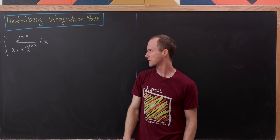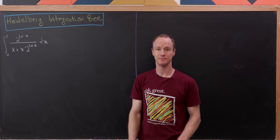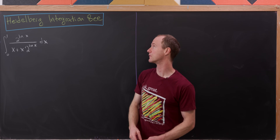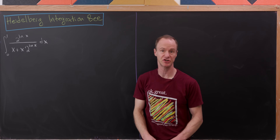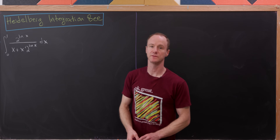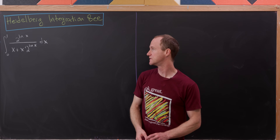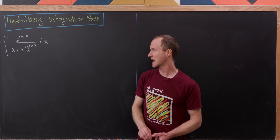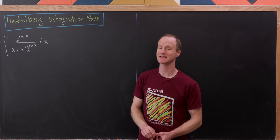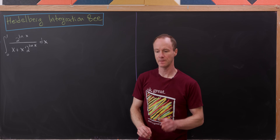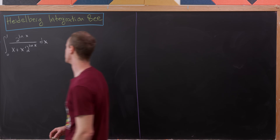Today I've got a really nice integral that was my submission to the Heidelberg University Integration B this year. We're going to find the integral from 0 to 1 of 2 to the natural log of x over x plus x times 2 to the natural log of x. Let's get to it.